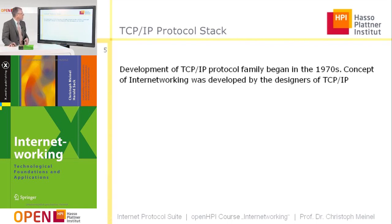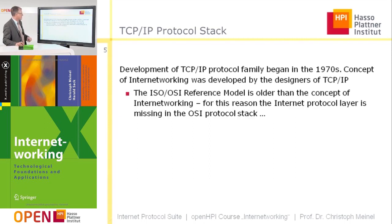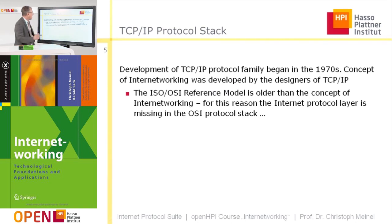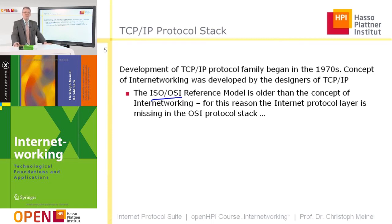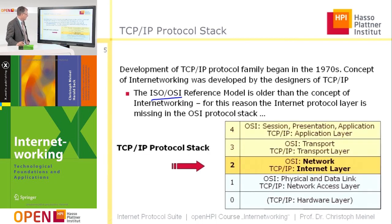The development of the internet protocol family TCP/IP began in the 1970s. While engineers developed TCP/IP, they developed the concept of internetworking. There was an older reference model for communication — the ISO-OSI reference model — which was developed theoretically. In this ISO-OSI reference model, the internetworking concept was not developed, so in the ISO-OSI reference protocol stack, the internet protocol layer is missing.